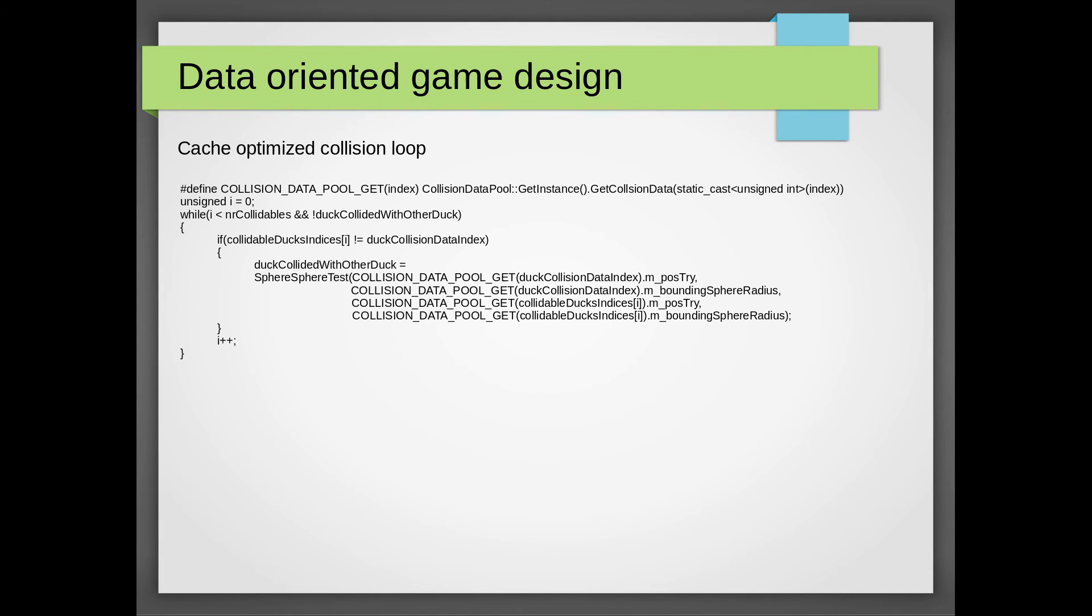Here is the actual source code from the collision system C++ source file. Since we make sure to only use data from the collision data free list in our loop, we are more likely to get the data that is already in the L1 cache.